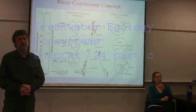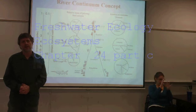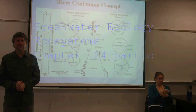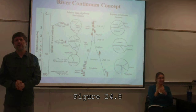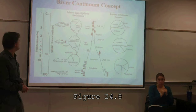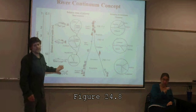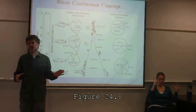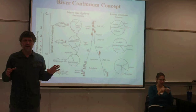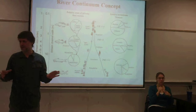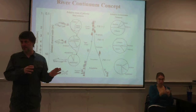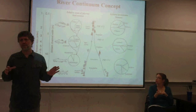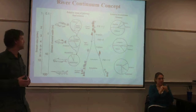One of the real core conceptual backgrounds in understanding stream ecosystems is the river continuum concept. The nice thing about this is that it puts everything together from the basic physical characteristics all the way up to the fish. It's a very comprehensive view of the way systems work, with this idea of ecosystems as linked to each other and sources and subsidies of materials.